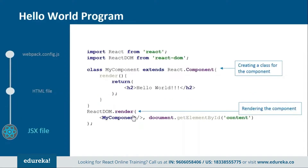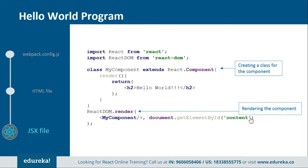Next we have the JSX file. In this you need to import React and ReactDOM from their respective directories, then create a component called MyComponent — or any name you want — which should extend React.Component, because in React everything is a component. Inside it we create a render function to return the HTML representation. Finally, we render MyComponent over the div tag from the HTML file, referenced by its id 'content'.